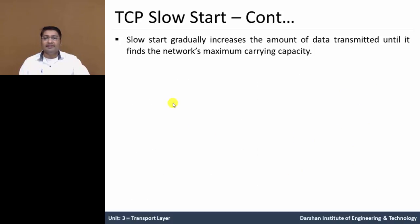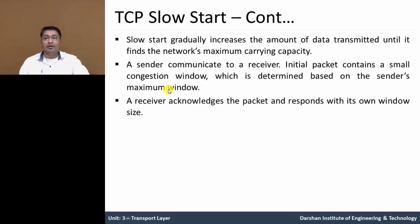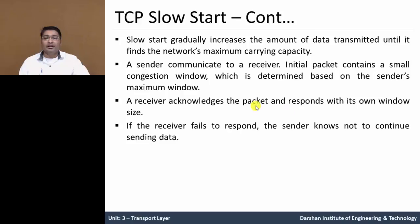So to summarize the same thing: slow start gradually increases the amount of data transmitted until it finds the network's maximum carrying capacity, meaning the receiver's maximum carrying capacity. The sender communicates to the receiver, and the initial packet contains a small congestion window — we can say one segment — which is determined based on the sender's maximum window. On the receiving side, the receiver acknowledges that packet and responds with its own window size. So if the receiver fails to respond, the sender knows not to continue sending data.